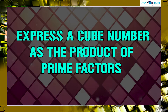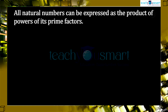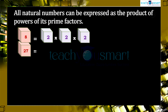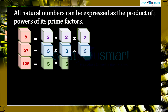We know that all natural numbers can be expressed as the product of powers of their prime factors. Let's see the prime factorization of some cube numbers. 8 equals 2 × 2 × 2. 27 equals 3 × 3 × 3. 125 equals 5 × 5 × 5.